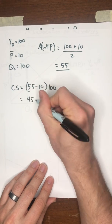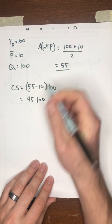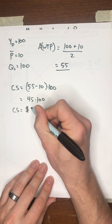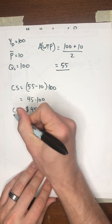This is 45 times 100. So consumer surplus in this market would be $4,500.